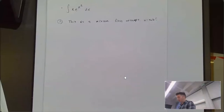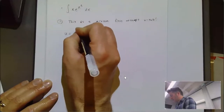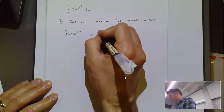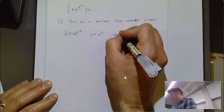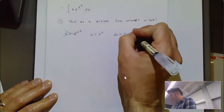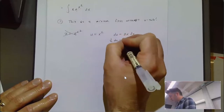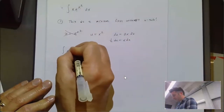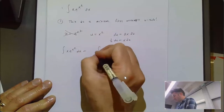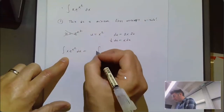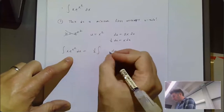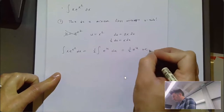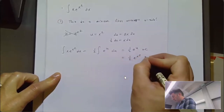If we let u equal x², then du is 2x dx and one-half du equals x dx. So the integral of x·e^(x²) dx becomes the integral of one-half·e^u du, which is one-half·e^u plus C, which is then one-half·e^(x²) plus C.